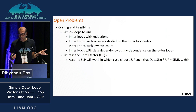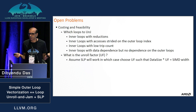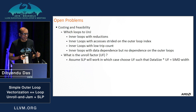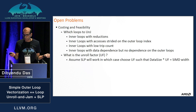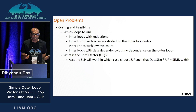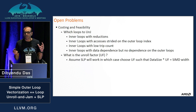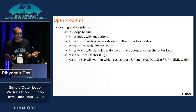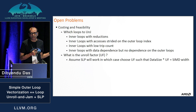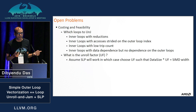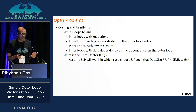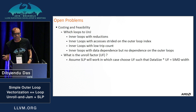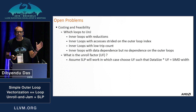What are the open problems with this approach? The main open problem is: which loops do you really unroll-and-jam if no pragma is provided? Obvious targets are inner loops with reductions, inner loops with accesses strided on the outer loop index, inner loops with low trip count, and loops with data dependence. But you still need to look at costing carefully. And when doing unroll-and-jam early, what unrolling factors do you use? Mainly, if you assume SLP will work in these cases, your data size times unrolling factor should equal your SIMD width — but there are still open questions.